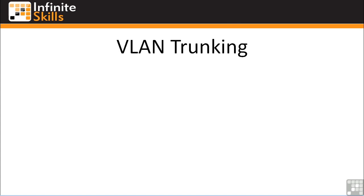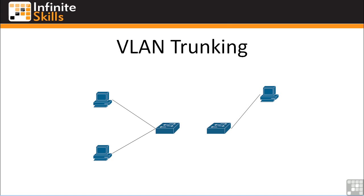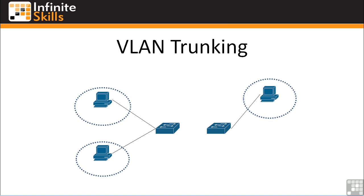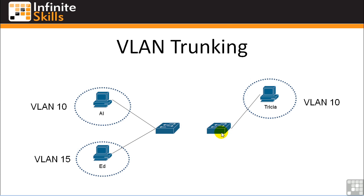Let's expand on the diagram from the last video. Here are our three hosts, except this time Trisha and Al are both in the same VLAN — VLAN 10 — and Ed is in VLAN 15. Trisha is in a different part of the building and connected to one switch, while Al is connected to the same switch as Ed. Under normal circumstances, if Al sent a broadcast out on VLAN 10, Trisha would not necessarily see that broadcast because there's nothing connecting the two switches.